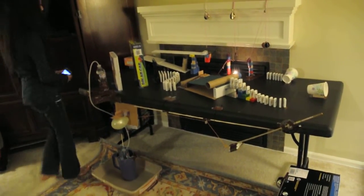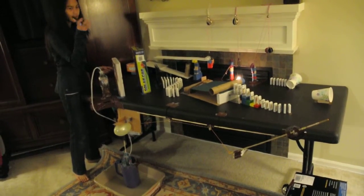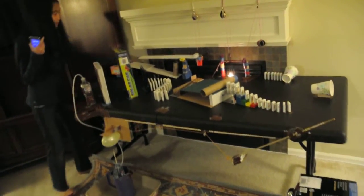So this is a project in the Rube Goldberg machine by Emma and Ashley. How it works is a vibrating cell phone will go down this inclined plane.